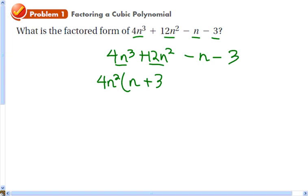If you look closely now, n + 3 is also a factor of these two if I factor out a negative 1. So I'm going to factor a negative 1 out of there, and I get n + 3. So now I can write this as 4n² - 1 times the quantity n + 3.